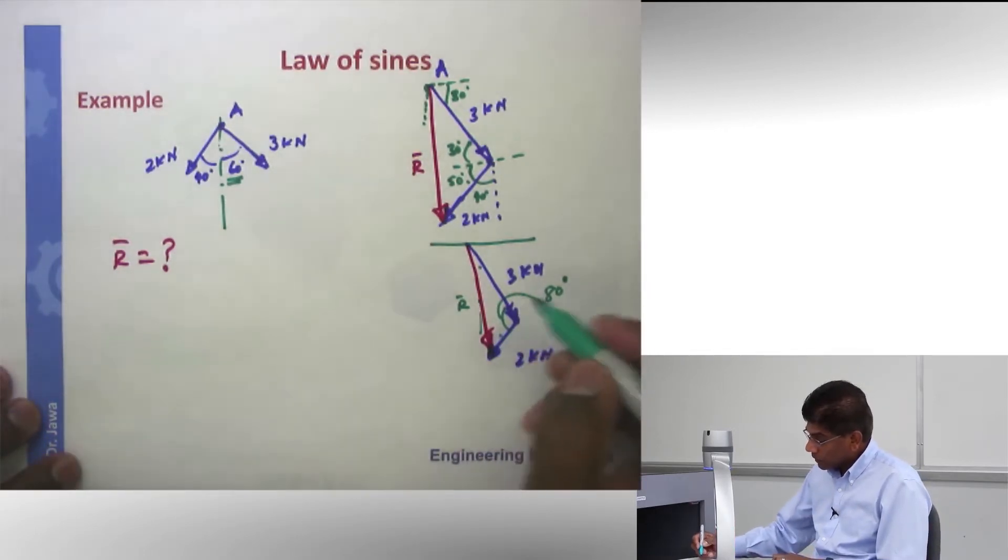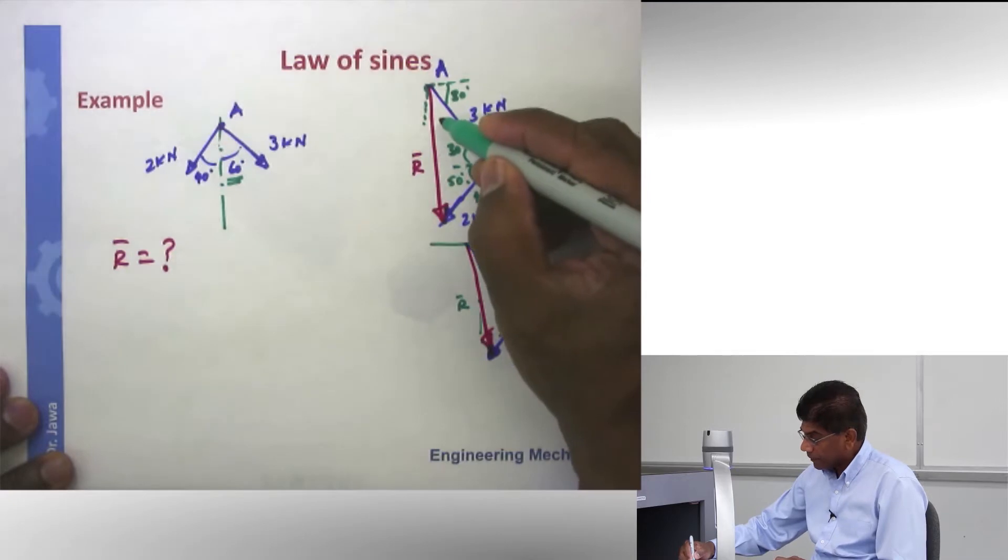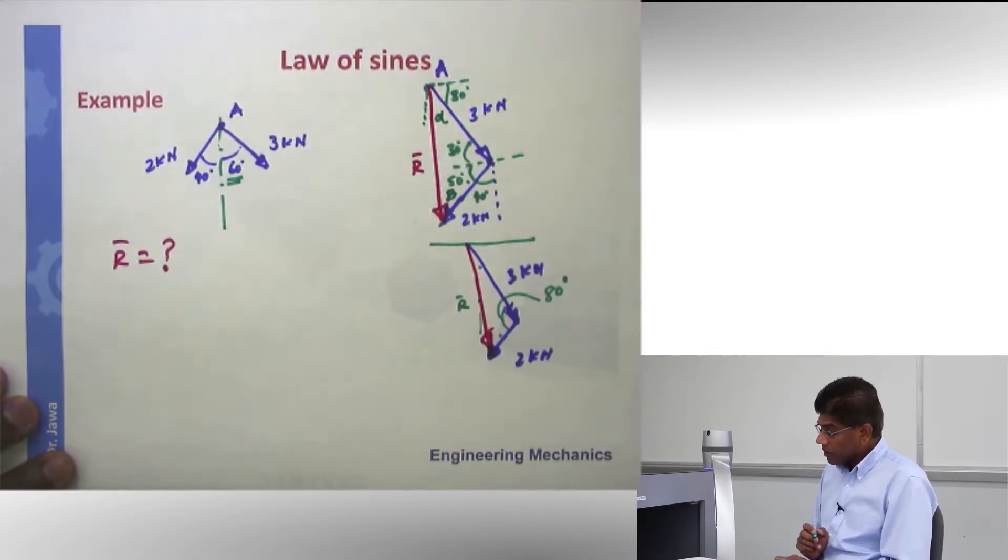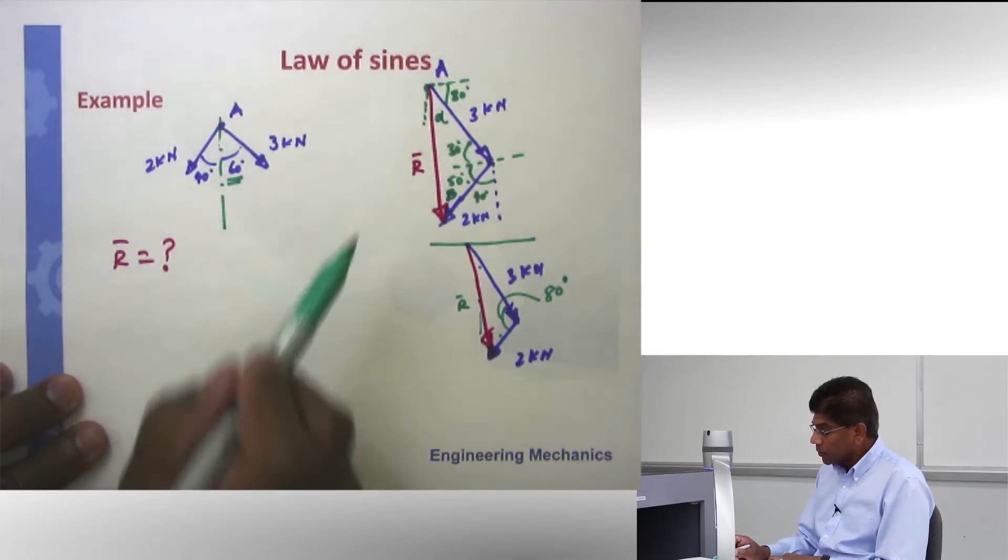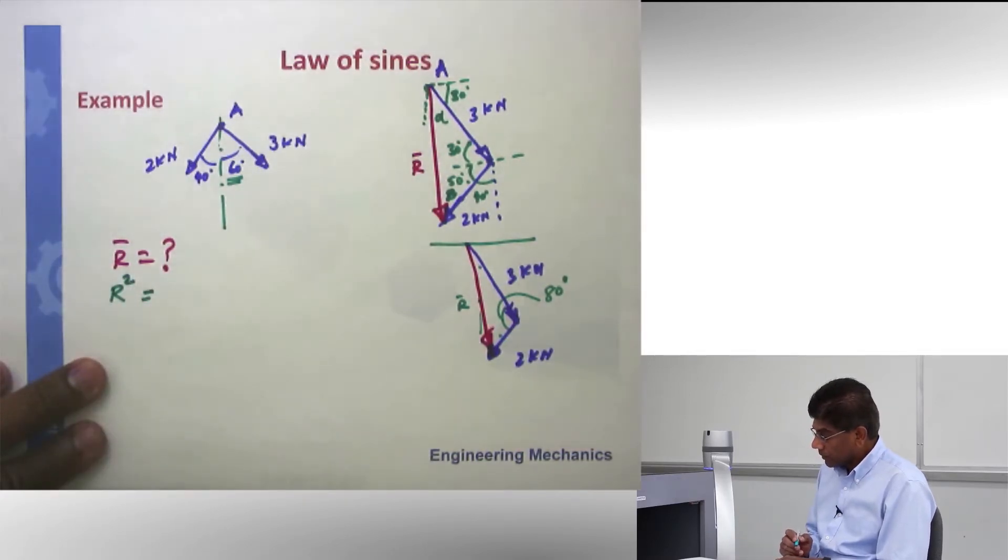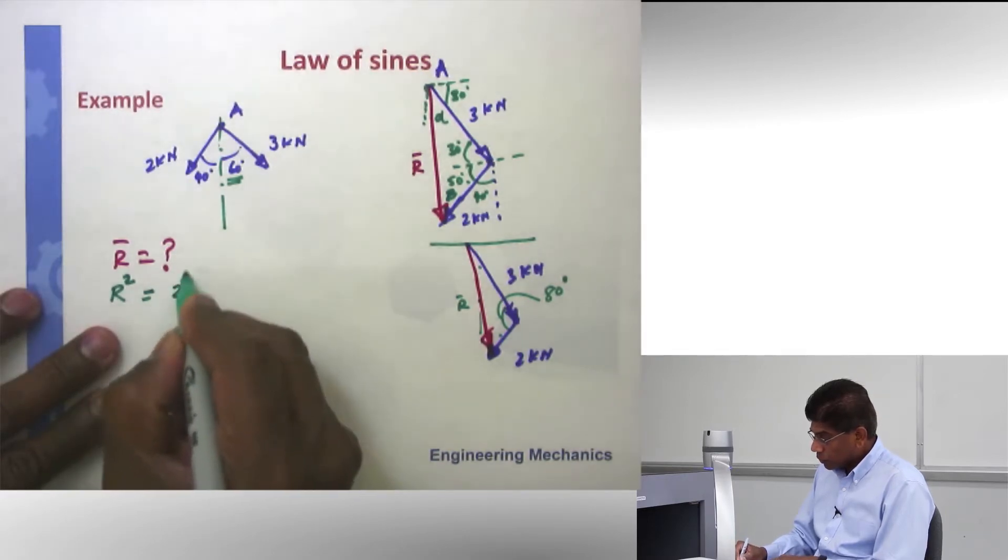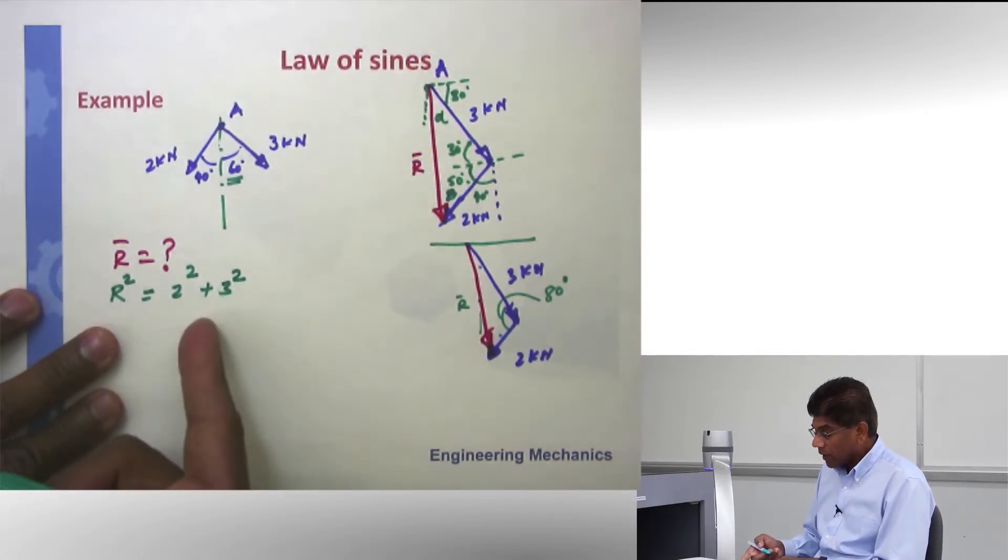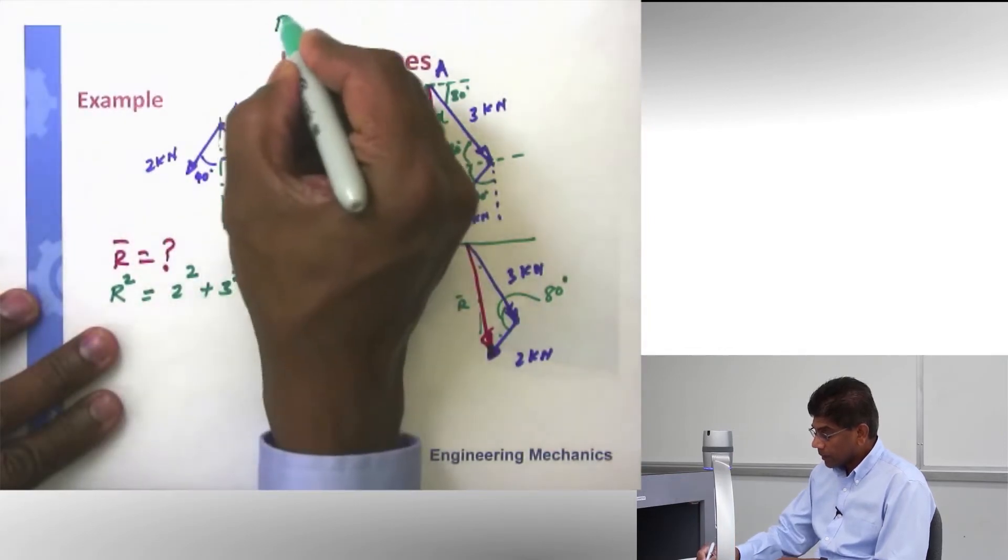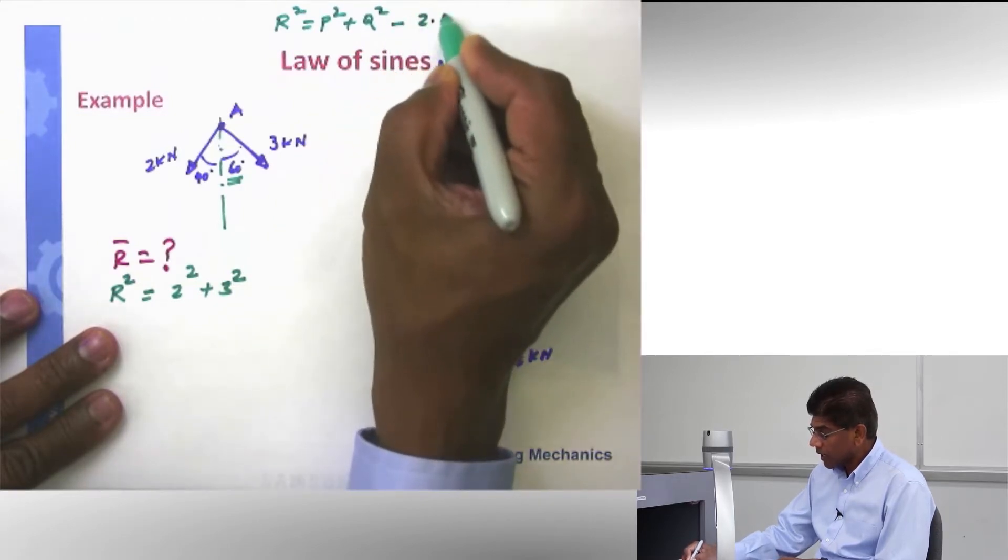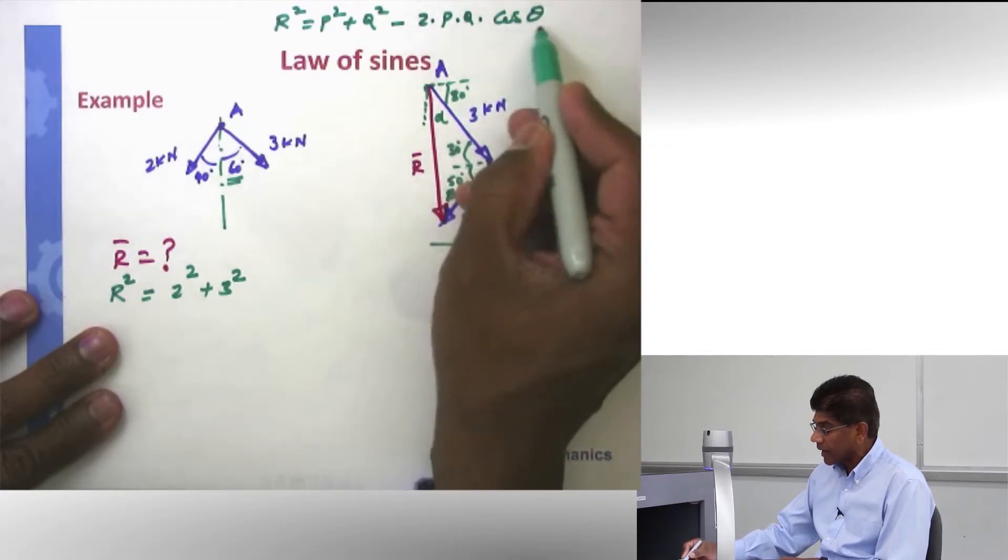So how do I find these angles? This angle, I can call it alpha. Let's say this is beta. In order to calculate these angles, I'm going to use my law of cosines. If I want to use law of cosines, remember, R squared, I am writing just the magnitude, equal to 2 squared, which is this side, plus 3 squared. By the way, if you forgot this formula, I'm going to write this on top here. R squared equal to p squared plus q squared minus 2 times p times q times cosine theta, the angle between. So I'm following this.